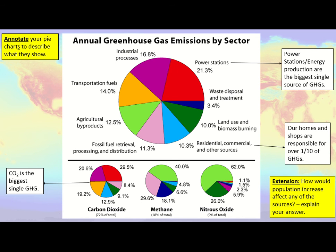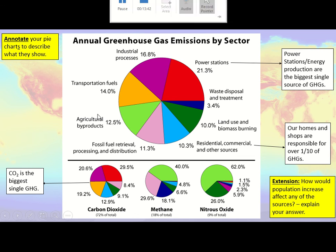Looking at the bottom-left pie chart, carbon dioxide (CO₂) actually makes up 72% of all greenhouse gas emissions in the big combined pie chart at the top. That's why people talk about reducing their carbon footprint — CO₂ is such a large proportion of all greenhouse gases released into the atmosphere. It's something we need to address quite significantly. CO₂ is the biggest single greenhouse gas released from human actions.